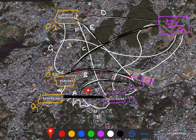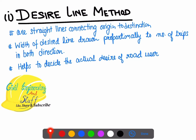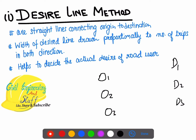So in the desired line method, straight lines connect the origin and destination points, and as the number of trips in both directions increases, the width of the desired line increases. This helps decide the actual design line of the road. We have various origin and destination points, and as the number of trips increases, the width increases — allowing us to visually represent the data observed from the O&D study.